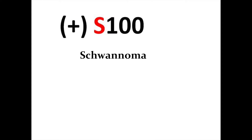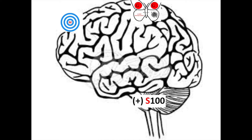Going to the next one: schwannoma. It's S100 positive — that's why the S is red there. Where do we put it? This is the one that's kind of the exception to the rule for adults. We said adults should be in the supratentorial, but schwannoma is S100 positive and usually found at the cerebellopontine angle. That's why it's down there — associated with cranial nerve 8. S100 positive, think schwannoma.